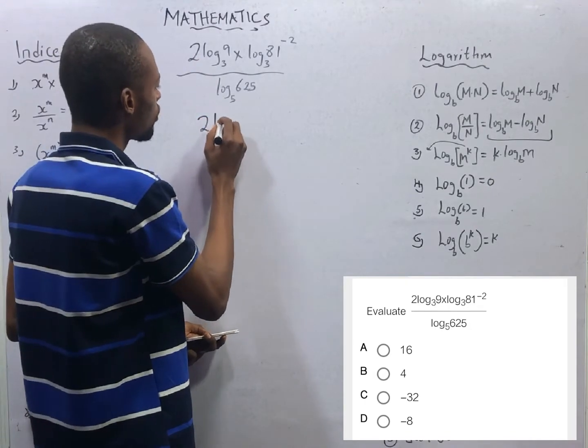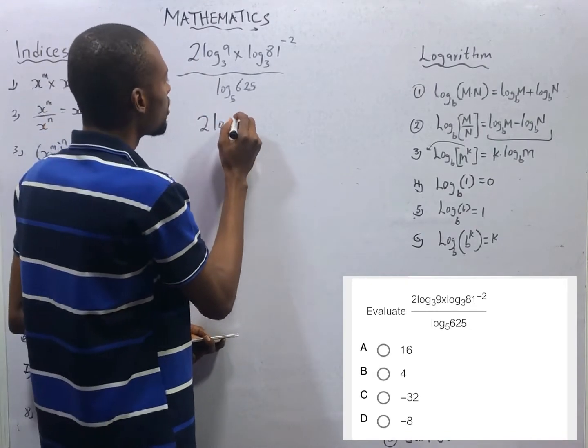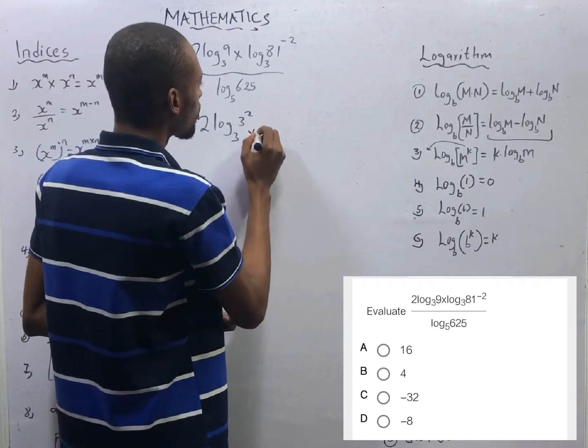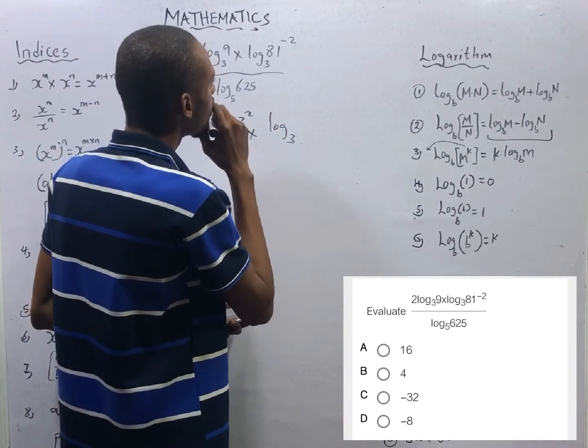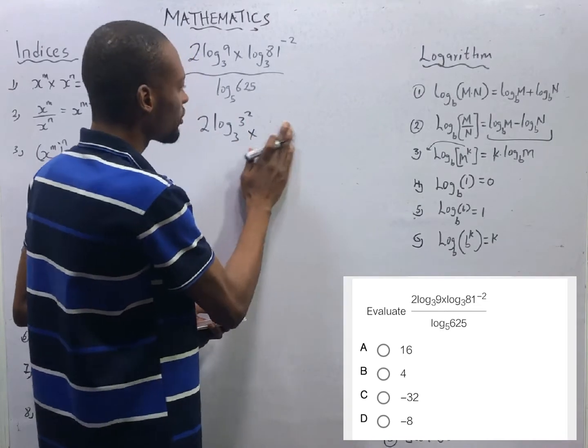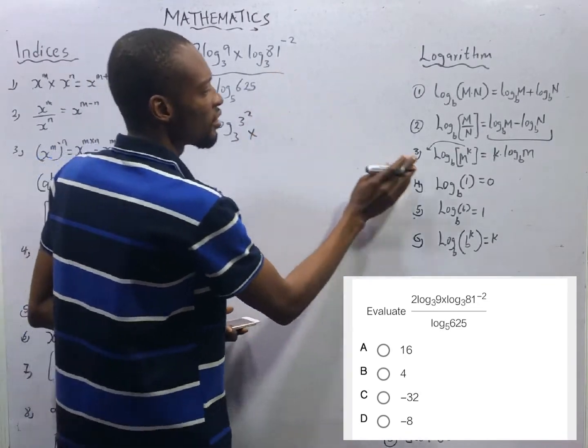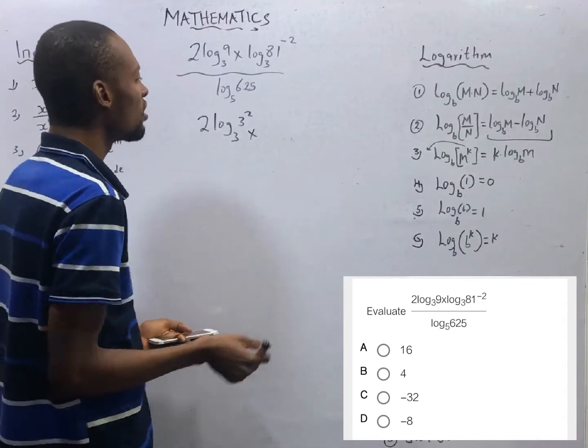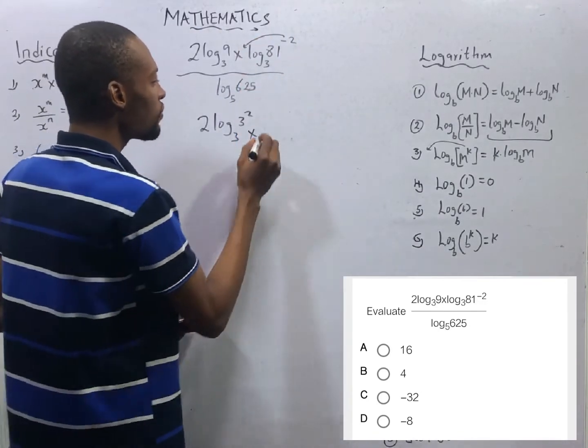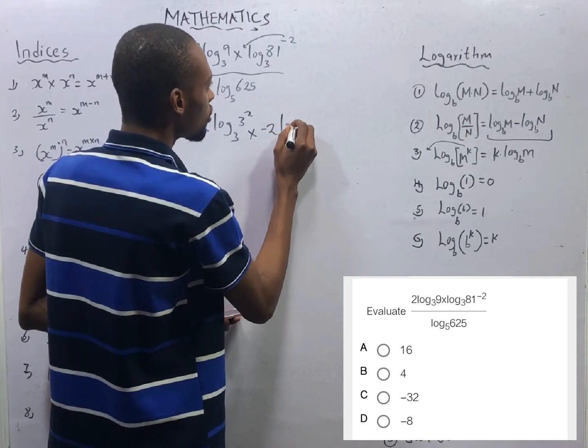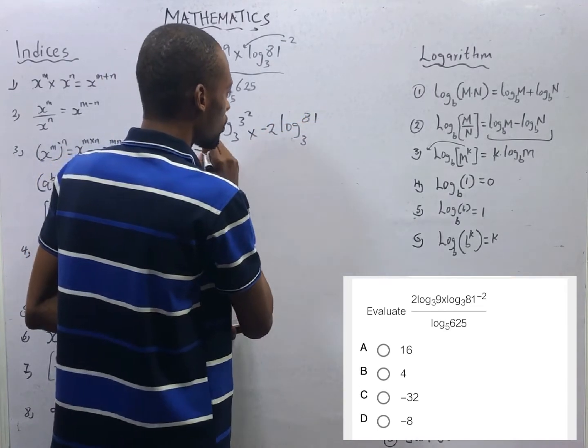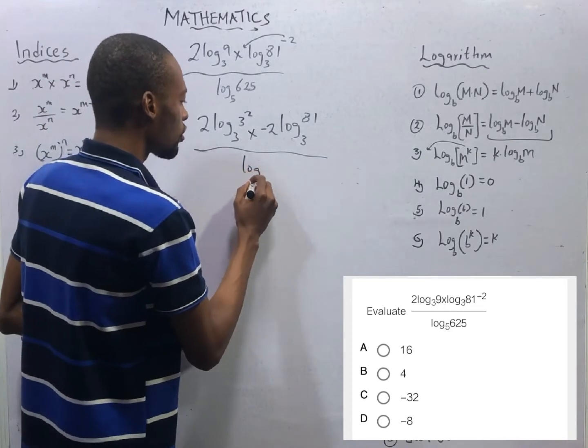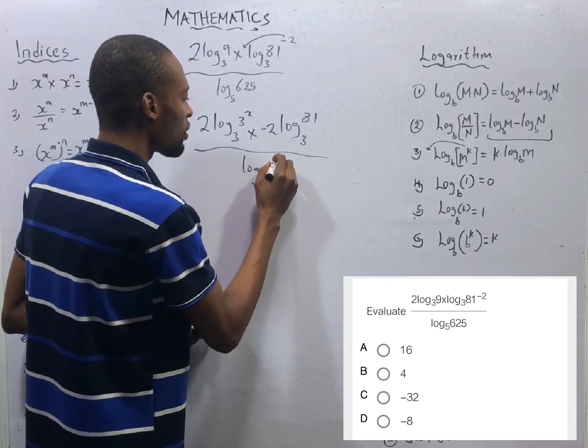And this is the same thing as log to base 3. 81 is 3. Before then, from here, if you have log to base a of another number raised to a power, or you have log raised to any power, we can bring down the power to give you log, 2 minus 2 log to base 3, 81 over 5 raised to the power of 4 is 625. So log 5, 5 raised to power of 4.